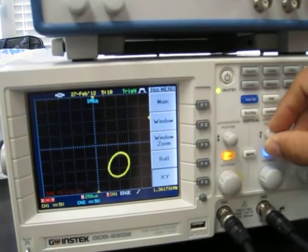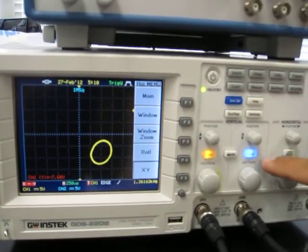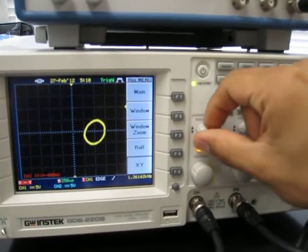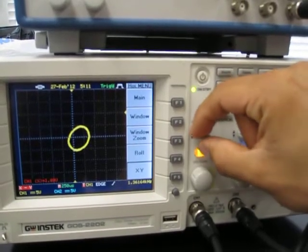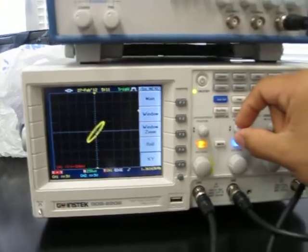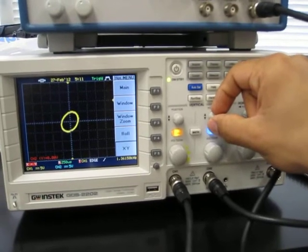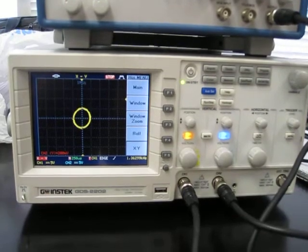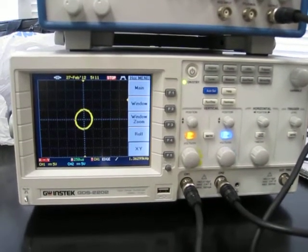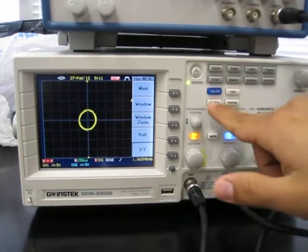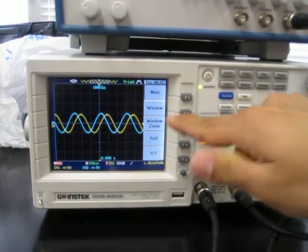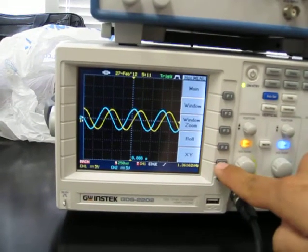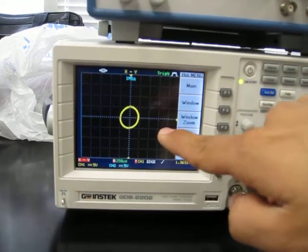You can use these positioners for channel 2 and channel 1 to get the figure to the center and make it clearer. This is a circle, which shows that it is 90 degrees out of phase. On the Lissajous figure, it will show that by displaying a circle.